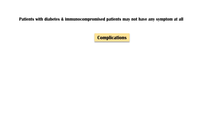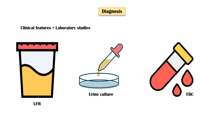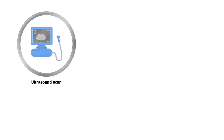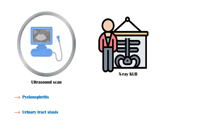Complications of untreated urinary tract infections include sepsis, acute kidney injury, and recurrence. Diagnosis can be made with a combination of clinical features and laboratory studies, including urine full report, urine culture, and full blood count. Additional tests include ultrasound of the kidneys, ureters, and bladder in pyelonephritis and suspected urinary tract stasis, and x-ray of the kidneys, ureters, and bladder to look for urinary tract stones.